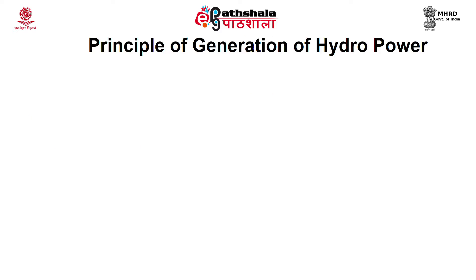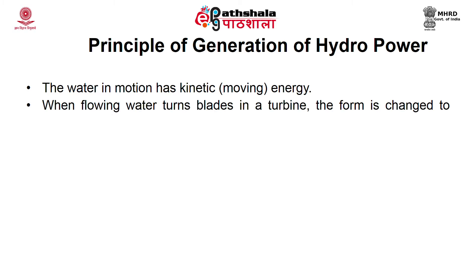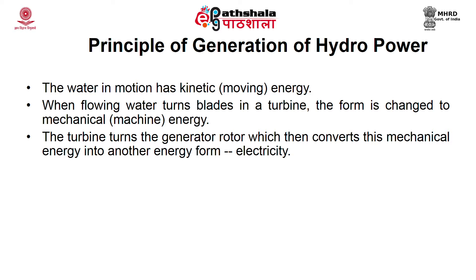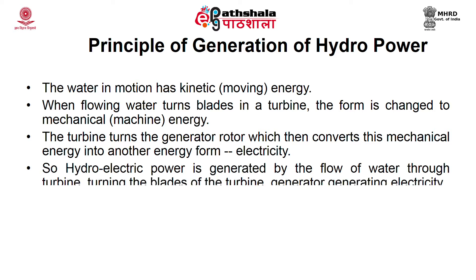The principle of hydropower generation: water in motion has kinetic energy. When flowing water turns the blades of a turbine, the energy changes to mechanical energy. The turbine turns the generator or rotor, which converts mechanical energy into electricity. So the sequence is: kinetic energy → mechanical energy → electrical energy, generated by water flow through a turbine.